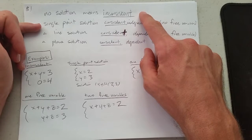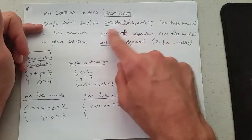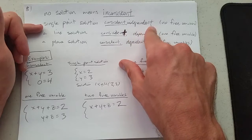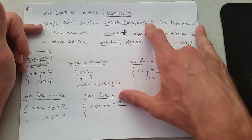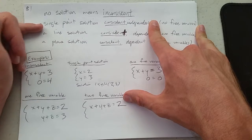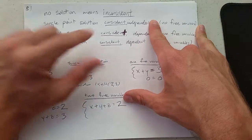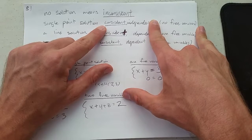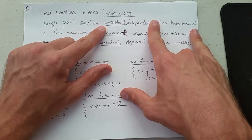If you have a single solution, a single point solution, we call this consistent and independent. We're going to find out very soon what free variables are. But if you have a single point solution, you are consistent with no free variables or zero free variables.